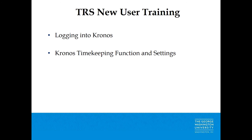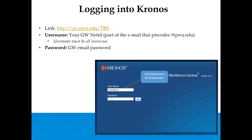TRS New User Training will cover logging into Kronos, Kronos timekeeping function, and settings. The link to log into Kronos is go.gwu.edu/TRS. Your username will be your official GW NetID, which is the part of your email that precedes @gwu.edu. Your username must be all lowercase, and the password is your GW email password.